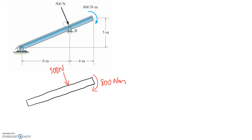We know that a pin is going to respond in both a horizontal and vertical reaction. It's not going to have a moment because it's still able to rotate freely about the pin. If I make a guess at the directions, I'm going to say the x-component is going to the right hand side, so this is going to be the opposite and point back to the left, and I'm going to say this is pointing down so my reaction here is going to be up.